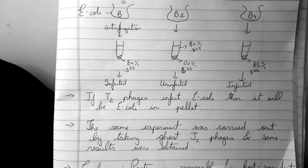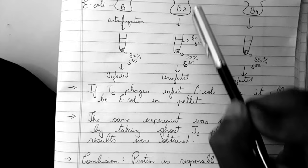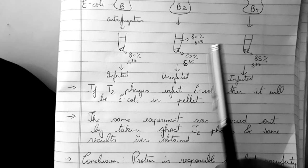Now what he wanted to prove is that the host specificity, that for B strain is infecting, B2 strain it is non-infecting and B4 strain it is infecting. This host specificity is due to the proteins and not the nucleic acid.